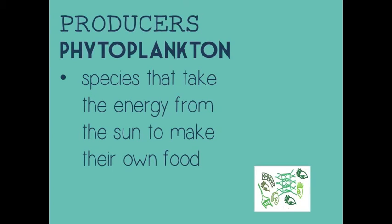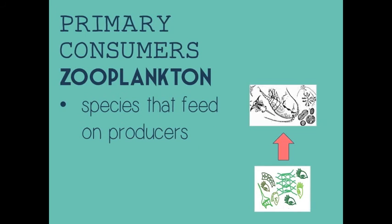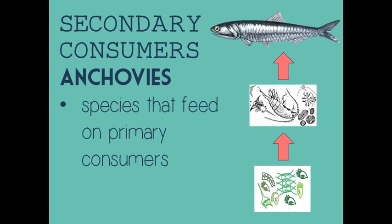Phytoplankton are the producers. This means they get their energy from the sun for vital functions such as growth and making their own food. In the Peruvian marine ecosystem, phytoplankton are the lowest trophic level of the food chain. Zooplankton are primary consumers because they feed on producers — in this case, they feed on phytoplankton — and are in the second trophic level. Anchovies are secondary consumers; they feed on phytoplankton and zooplankton and are in the third trophic level.